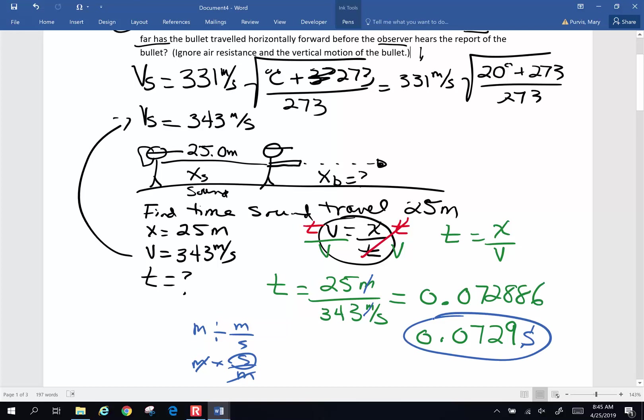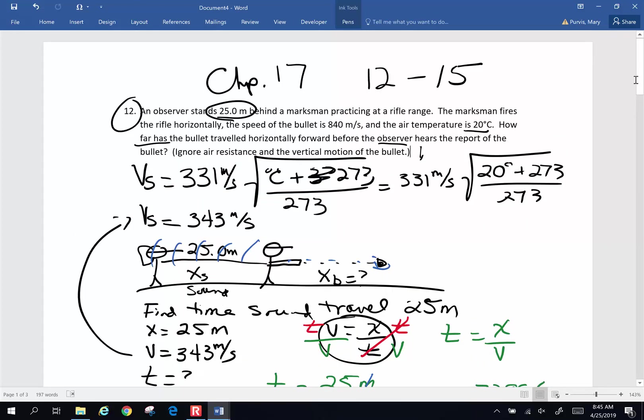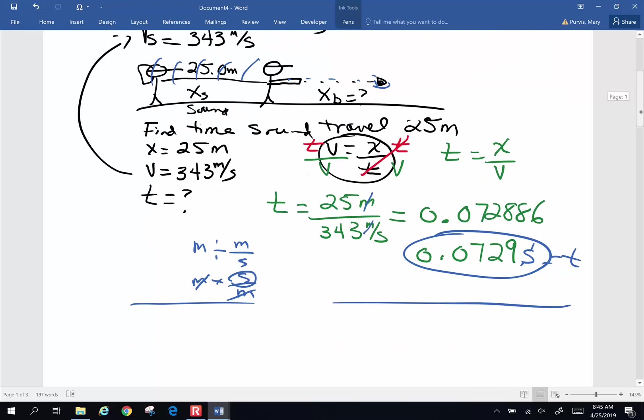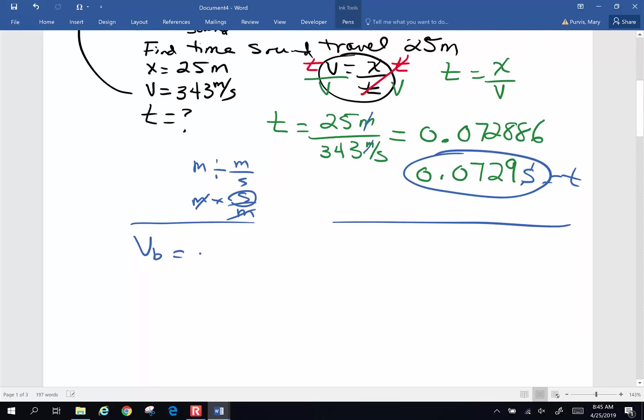So that's the time for the sound to travel back to the listener's ear. Now the question is, in that amount of time, how far has the bullet traveled forward? Well, we are told that the bullet is actually going to travel at a velocity of 840 meters per second. So the second part of this problem is we know the velocity of the bullet is 840 meters per second. The time it has traveled is that amount of time. And we want to know the displacement of the bullet.